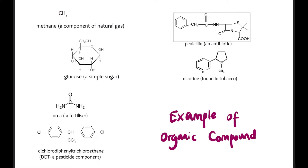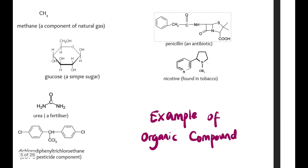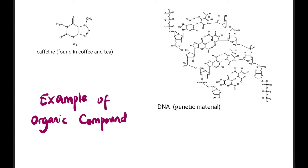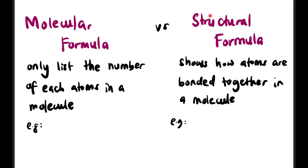Now let's have a look at some examples of organic compounds. We have CH4, methane — a component of natural gas. Then we have glucose, a simple sugar. We also have urea, which contains nitrogen and oxygen, DDT which is a pesticide, penicillin which is an antibiotic, nicotine, caffeine, and DNA — a genetic material. All of them have carbon and hydrogen as their base. Don't panic — we don't need to memorize all of these; we just need to know these are examples of organic compounds in our daily life.